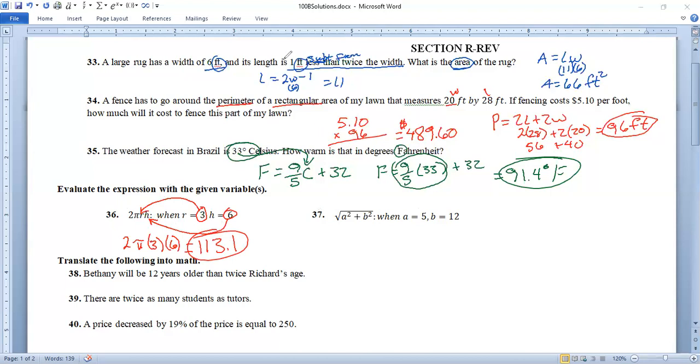Number 37, we get A is five. So it's going to go in there and B is 12. It's going to go in there. So we have the square root of five squared plus 12 squared. That's the square root of 25 plus 144 is the square root of 169. Plug that in the calculator and we get 13. Exactly.